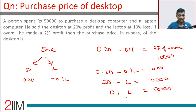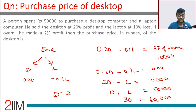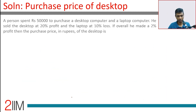Adding the two equations: three times the desktop cost equals 60,000, so the cost of the desktop is 60,000 divided by 3, which is 20,000. This is a good one — see you next time!